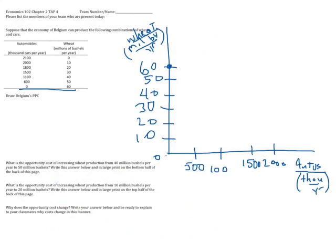And then when automobiles climb up to 600, sorry for the smallness of this writing, wheat is at 50, so 50 million, of course, and 600,000. And again, this needs to be roughly close, but not perfectly close.